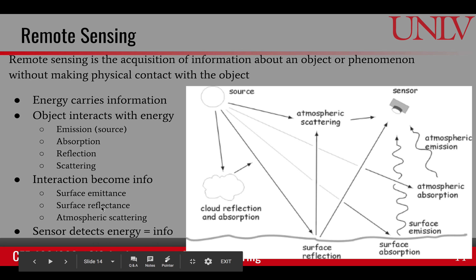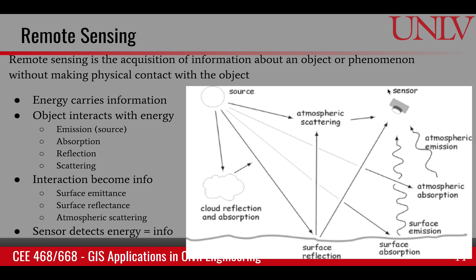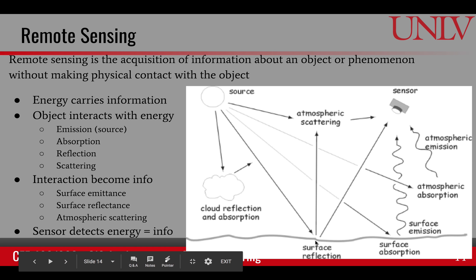When this energy is detected by the sensor, it becomes information detected by the sensor. Here is an example of satellite remote sensing where the source is the sun and the satellite has the sensor. The light from the sun travels through the atmosphere; it can get scattered by the atmosphere, so we can learn about the atmosphere. It may reach the ground surface and get reflected, absorbed, or re-emitted. When this information reaches the sensor, we can learn about the surface or subsurface information.